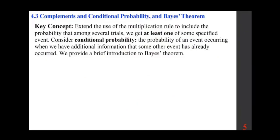Key concept: extend the use of the multiplication rule to include the probability that among several trials we get at least one of the specified event. Consider conditional probability: the probability of an event occurring when we have additional information that some other event has already occurred. We provide a brief introduction to Bayes' theorem.